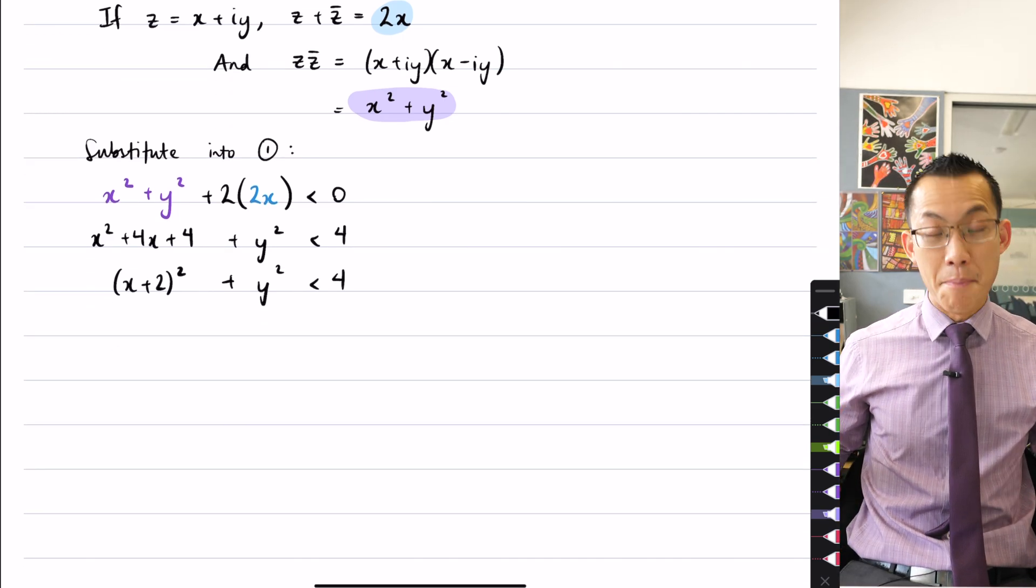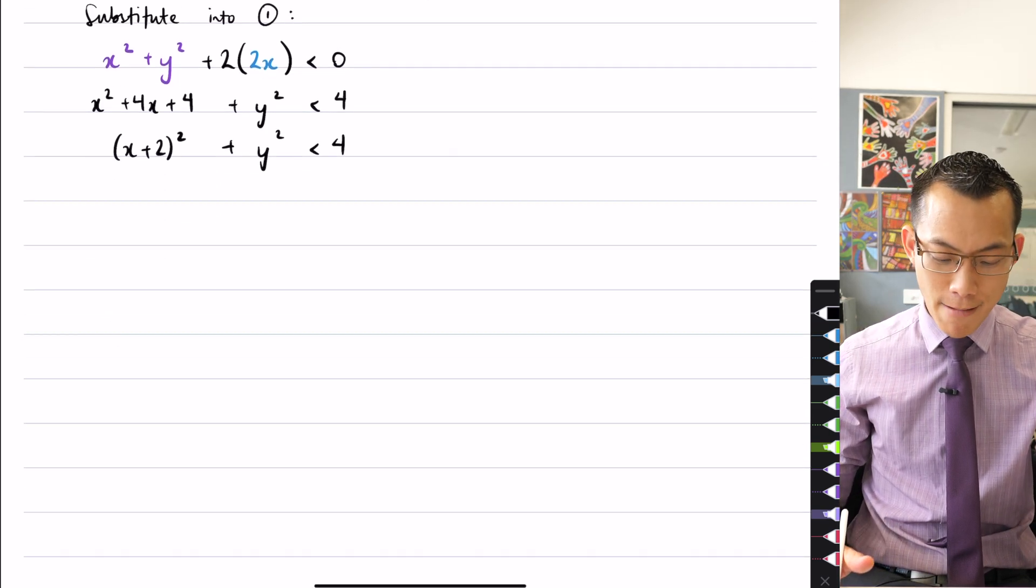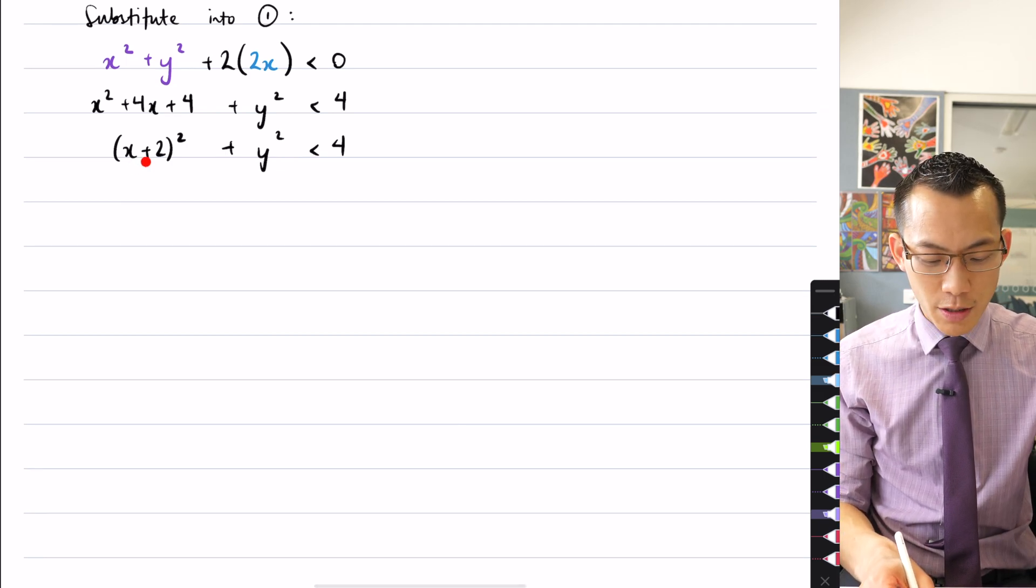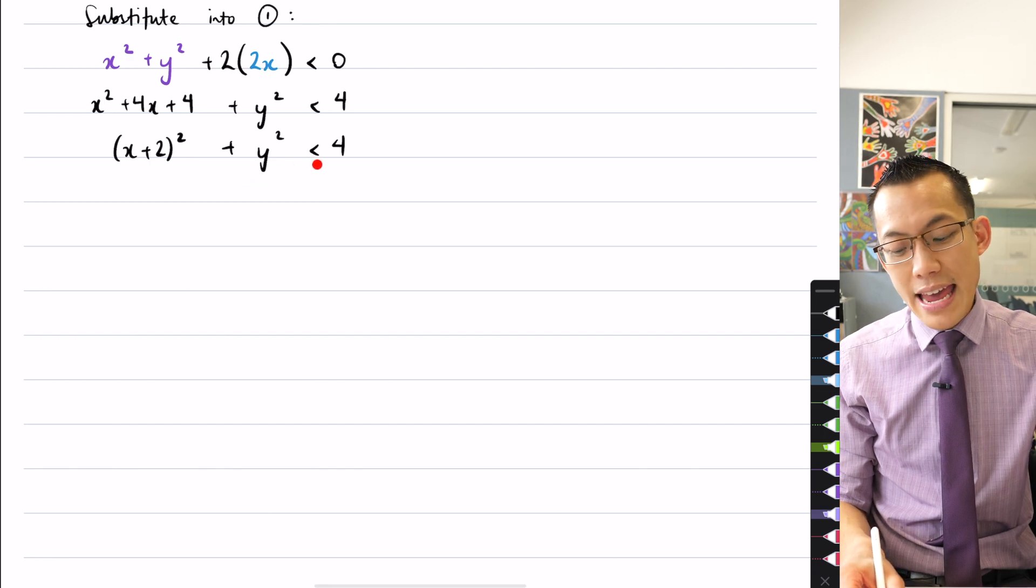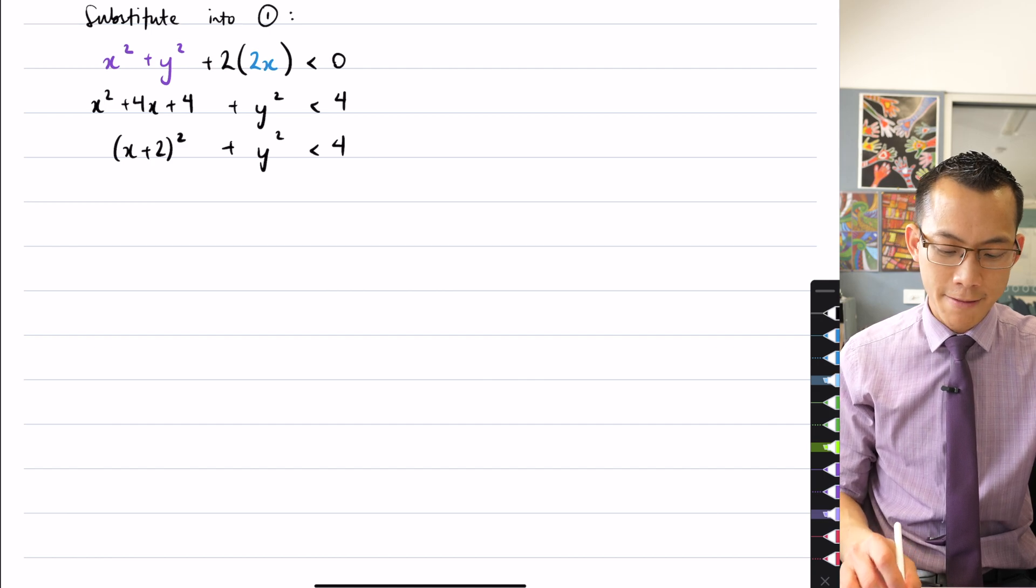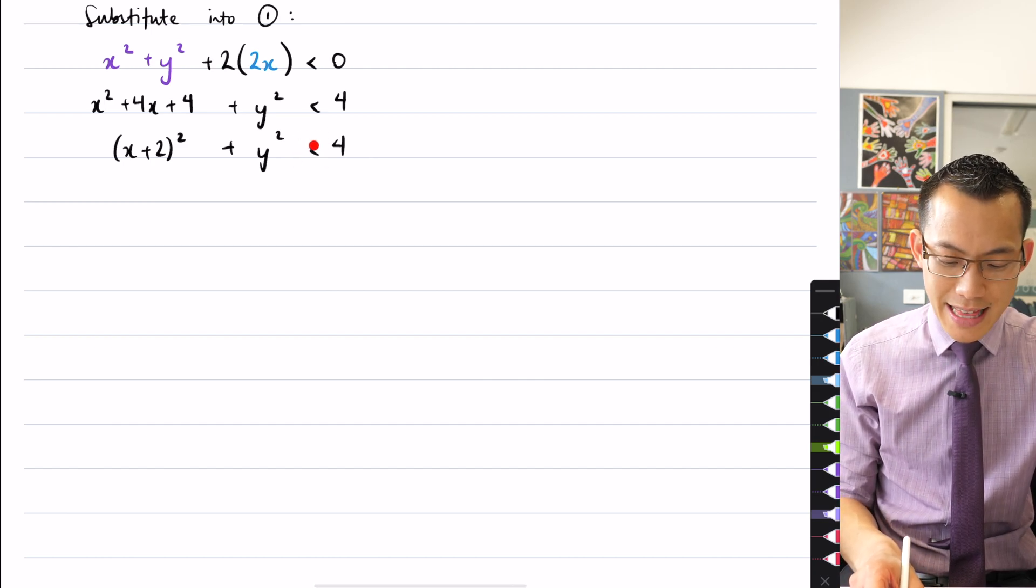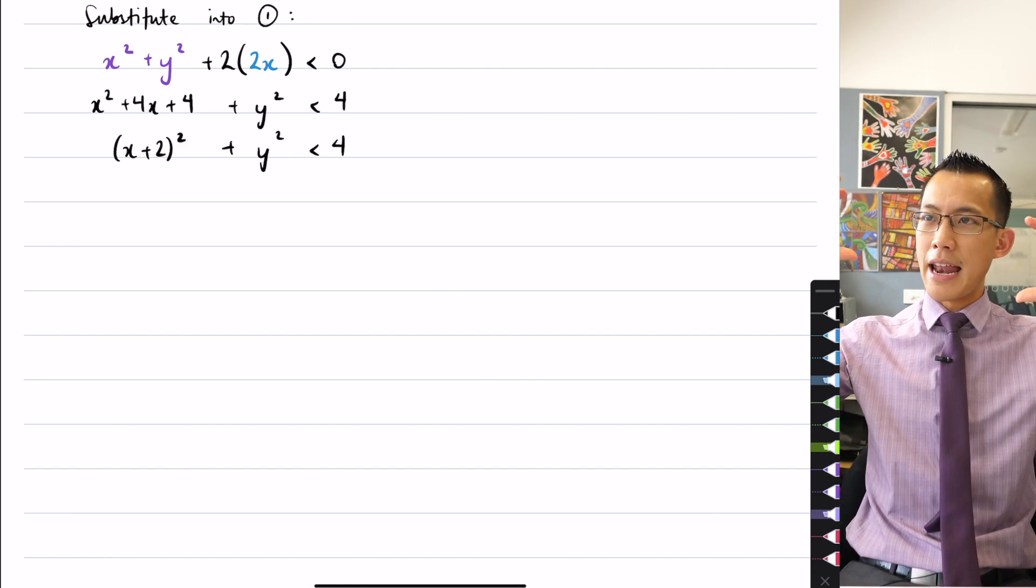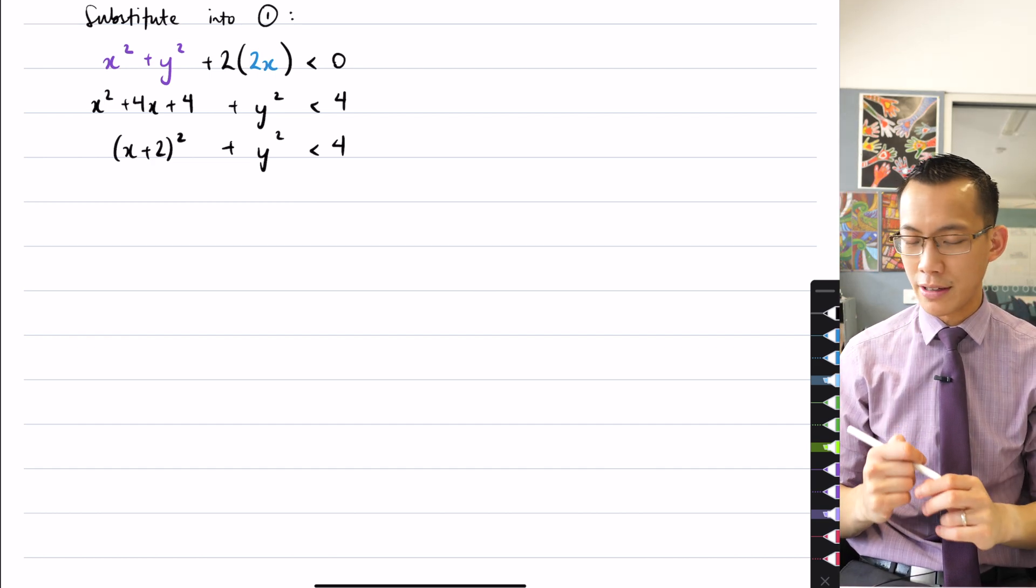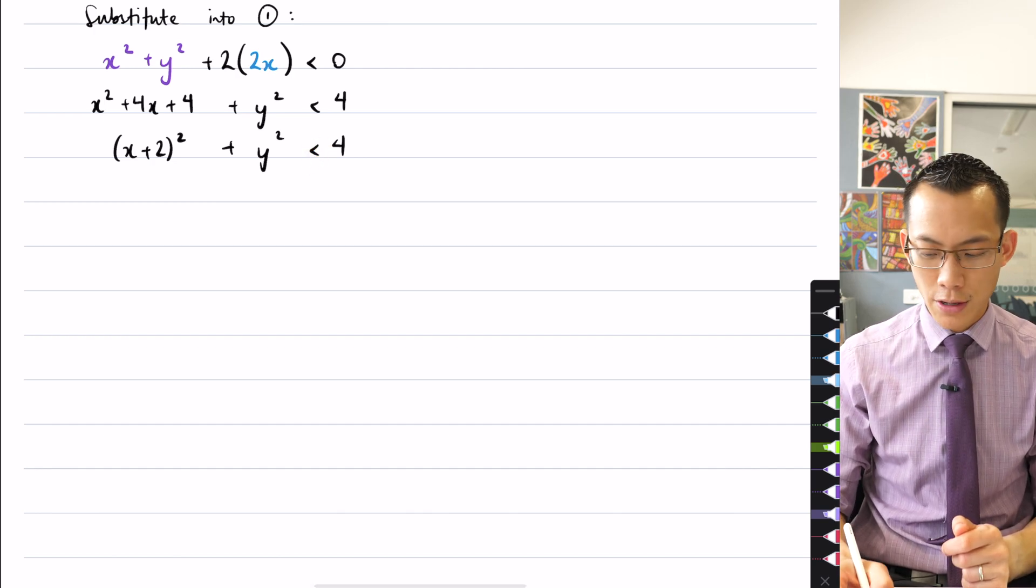Okay, so the boundary of this Argand diagram, this subset of the complex plane, is going to be the circle, (X plus 2) squared plus Y squared equals 4. That's how you get the boundary line of a subset of the complex plane. And then, because I see this less than, I want all of the circles that have that radius of 4 but smaller. I'm not including, actually, 4 because the boundary is not included.